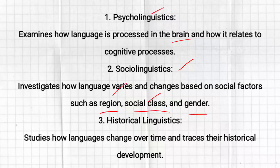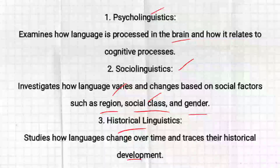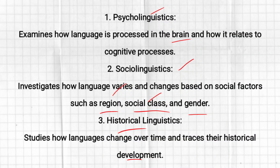The third branch is historical linguistics. Historical linguistics studies how language changes over time and traces its historical development. A best example is Old English, Middle English, and Modern English — there are many words that changed across these stages.